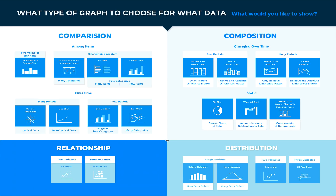When you are putting together a chart, you are trying to show one of four things with the data you have: a relationship between data points, a comparison of data points, or a composition of data.